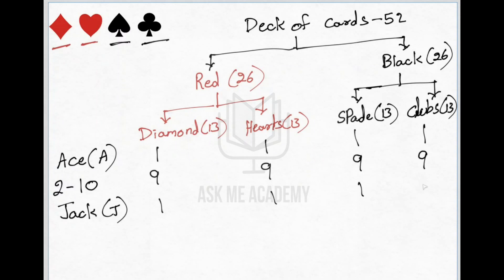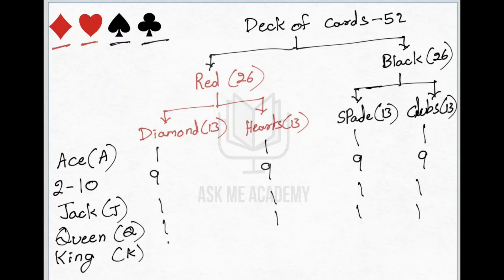Then comes Jack, represented by J — one card per shape, so 4 Jacks total. Then Queen, represented by Q — also 4 cards. And King, represented by K — again 4 cards. So Jack, Queen, and King are called face cards. The numbered cards 2 through 10 are called number cards.